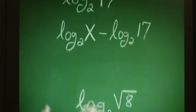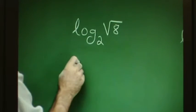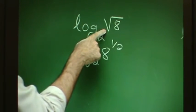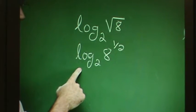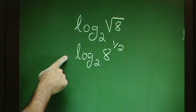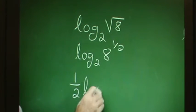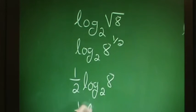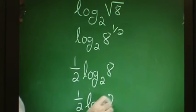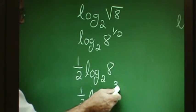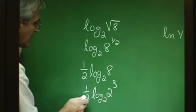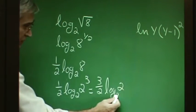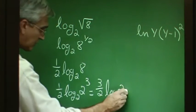In another problem, we can approach it like this: log base 2 of 8 to the one-half power — writing the radical as a fractional exponent. That allows us to use the power property: the exponent becomes a coefficient, giving one-half log base 2 of 8. But 8 equals 2 cubed, so we have log base 2 of 2 cubed. Using the power property again, 3 becomes a coefficient: 3 times one-half, or 3 over 2, times log base 2 of 2. Since these two numbers are alike, this equals 1, so the answer is simply 3 over 2.